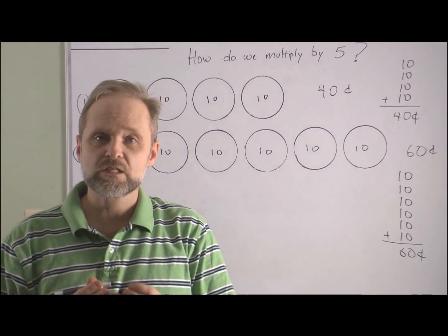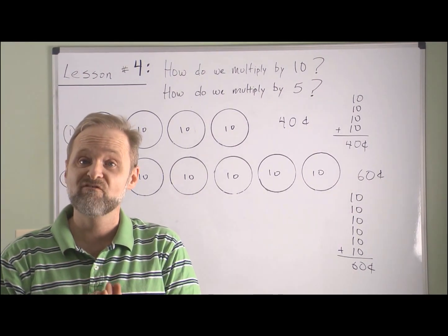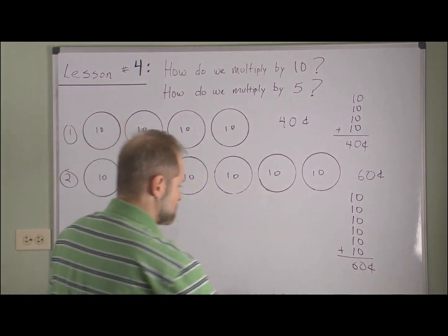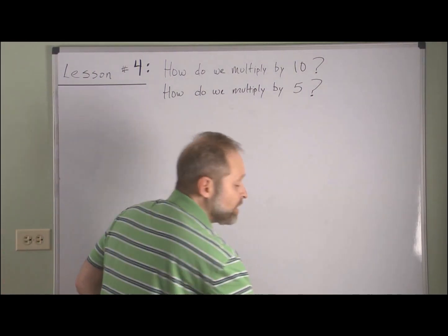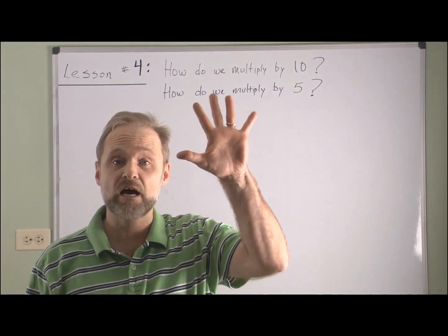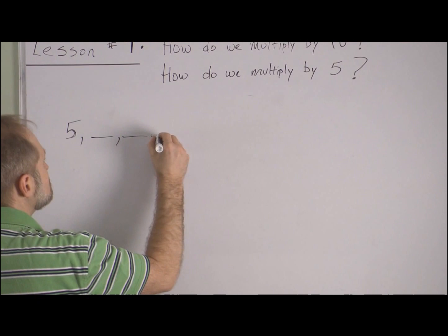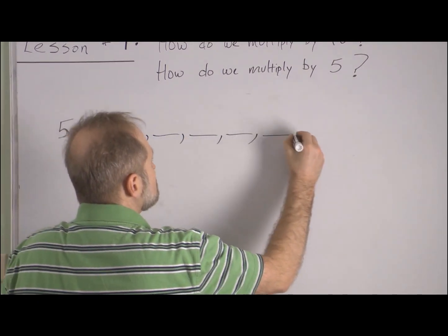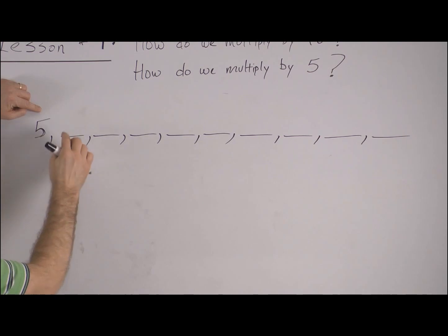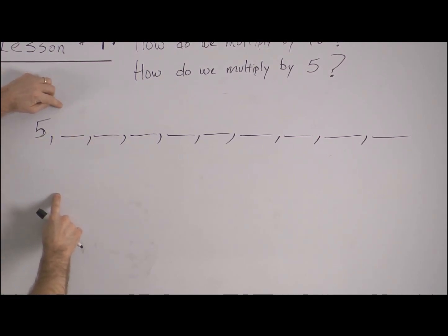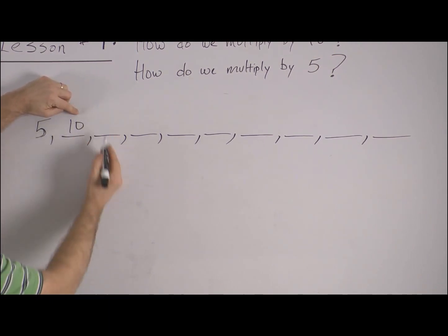What I want to do last here is go through skip counting by fives, because that will help us when we're focused on nickels. Multiplying by fives: if we want to multiply by five, we simply need to skip count by five. We start at five, then to get the next number we go up five — five plus five gives us ten. From ten, we go up five again — ten plus five gives us fifteen.